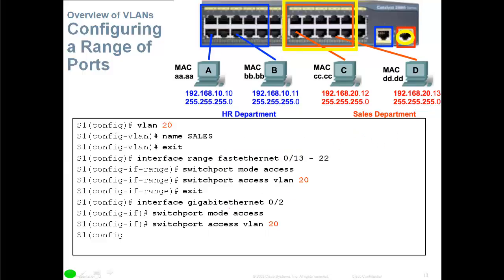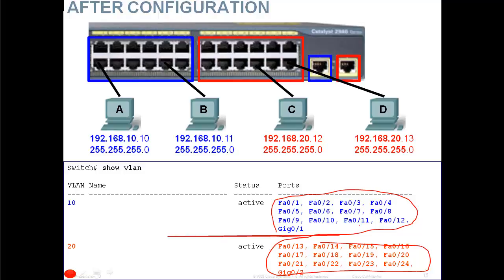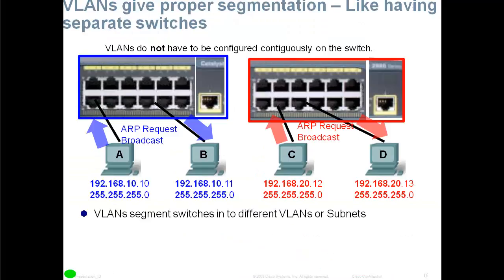VLANs do not have to be configured on contiguous ports. For example, port Fa0/1 can be on VLAN 10 while the very next port Fa0/2 is on VLAN 20. You can specify non-contiguous ports using a comma in the range command, so they don't have to follow sequentially one after another.